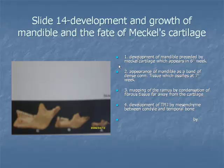Item 5: Growth of the mandible occurs by the modeling of bone. Increase in height and length occurs by the formation of alveolar bone, though some bone deposits at the lower border of the mandible. Increase in length is by deposition of bone on the posterior aspect of the ramus and the coronoid process, with compensatory resorption at the anterior surface of the ramus and the condyle.